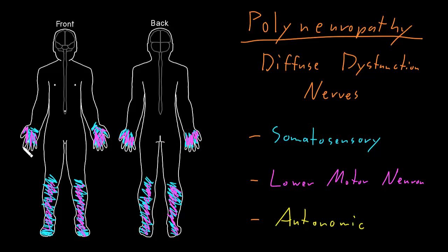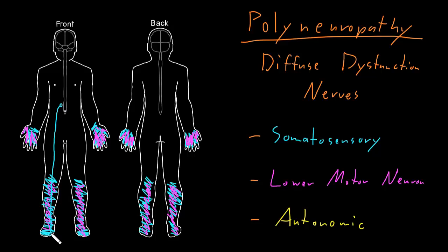The reason for this common polyneuropathy pattern of distal symmetric somatosensory and/or lower motor neuron abnormalities is unclear. One possibility is that it has something to do with the distance an axon travels from its soma. For a somatosensory neuron going to the toes, its soma is way up near the bottom of the spinal cord, and its axon is one of the longest in the body, having to travel all the way down to reach the toes. Similarly, a lower motor neuron has its soma in the bottom part of the spinal cord but one of the longest axons in the body to reach down toward the feet.